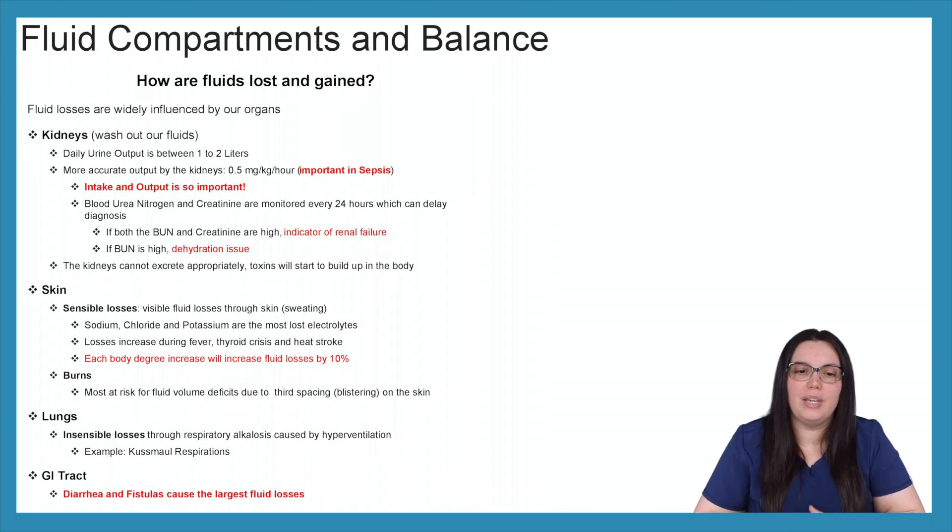So blood urea nitrogen and creatinine are usually monitored every 24 hours. And because it's every 24 hours, this can significantly delay diagnosis. So we really have to watch our patient's kidney functions so that we can catch these complications from occurring early. Something that's important to note when you're looking at your labs, if both your BUN and creatinine are high, then that's a key indicator that we're having some kind of renal failure, whether it be acute or chronic. When our BUN is just high alone and our creatinine is fine, we're looking at more of a dehydration issue. So that's really important to know, especially when you're taking your NCLEX. The kidneys cannot excrete appropriately. So toxins will begin to build up in our system like we see with sepsis, causing more complications.